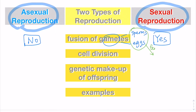For the sperms and eggs to fuse together, this process is called fertilization. When fertilization occurs, they will be fused together to form something called the zygote, and the zygote will eventually become an embryo.